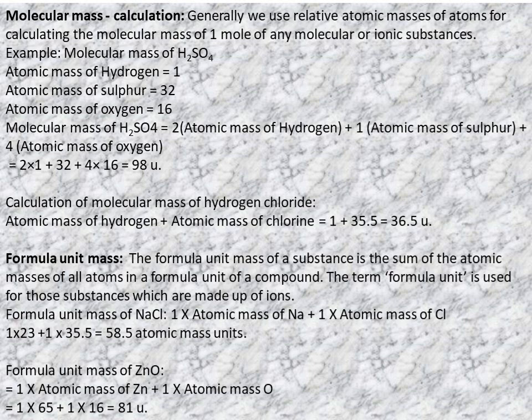Repeating formula unit mass: the sum of atomic masses of all atoms in a formula unit of a compound. Used for ionic substances. Formula unit mass of sodium chloride (NaCl): 1 × 23 (Na) + 1 × 35.5 (Cl) = 58.5 AMU.